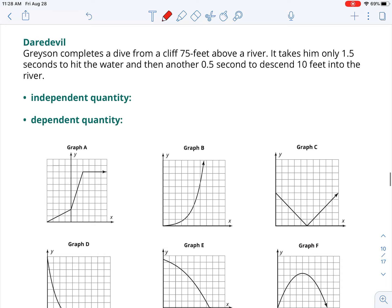Question one. Daredevil. We want to figure out the graph that goes with the scenario, and we also want to figure out what is the independent and dependent quantity, which we did yesterday. Grayson completes a dive from a cliff 75 feet above the river. It takes him only one and a half seconds to hit the water, and another half a second to descend 10 feet.